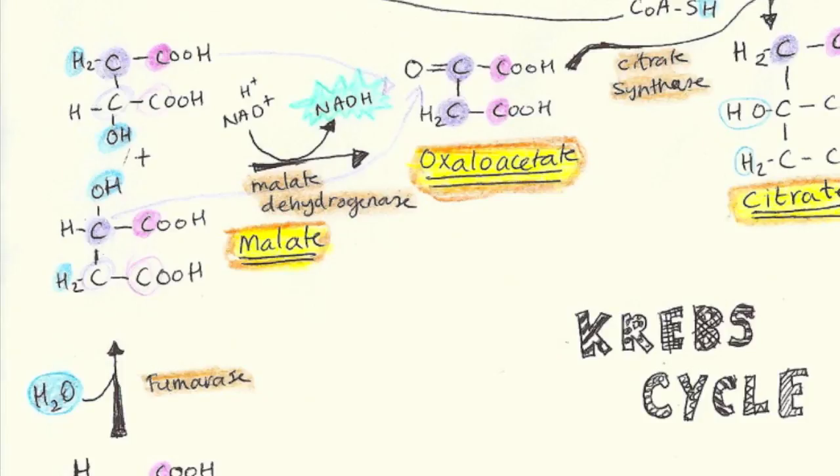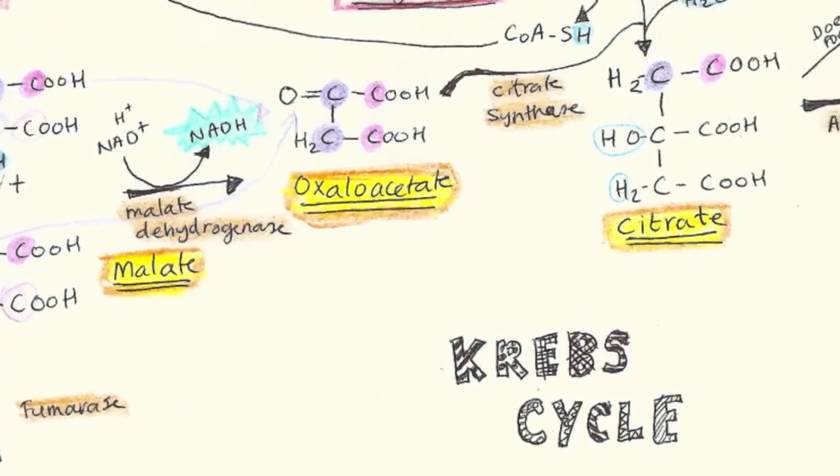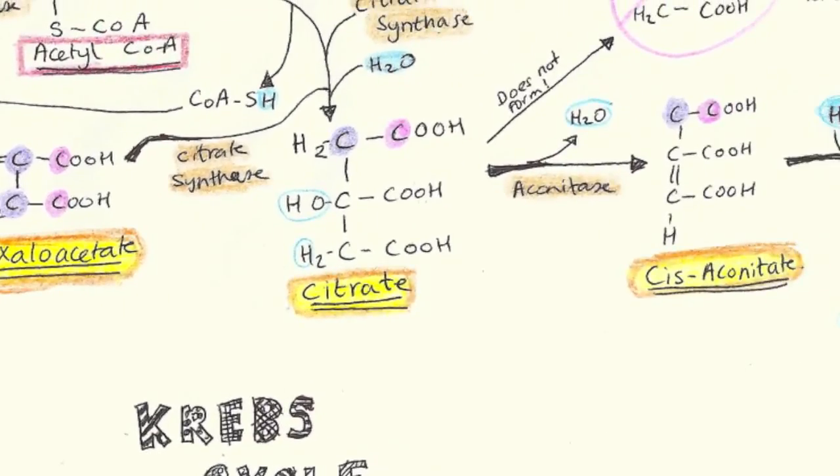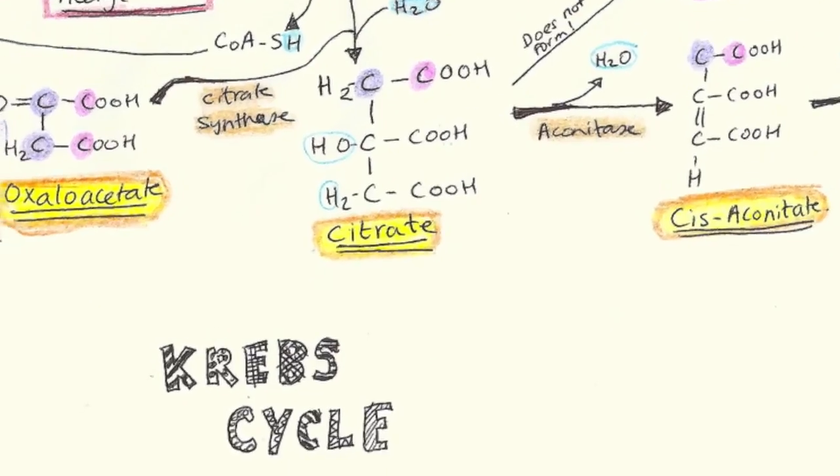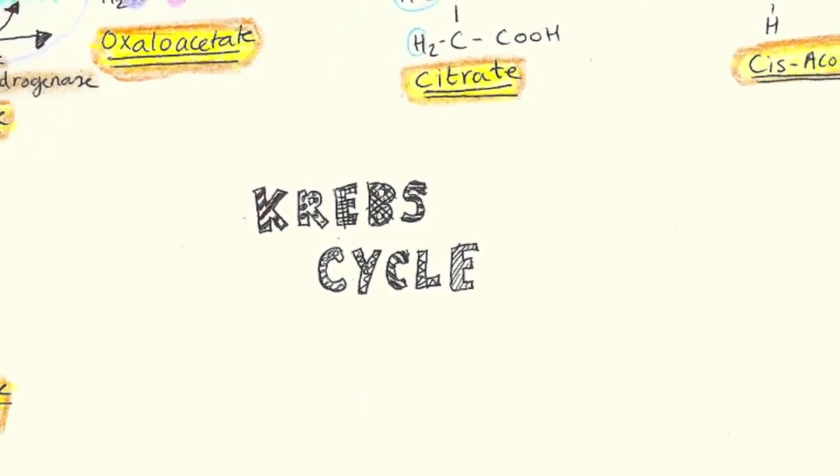We are now at the end of the Krebs cycle, although it never really ends since it's a cycle. Oxaloacetate moves back and reacts with acetyl-CoA to produce another citrate.